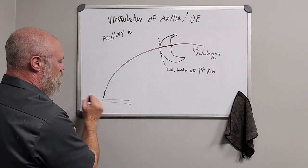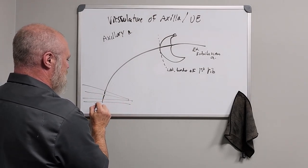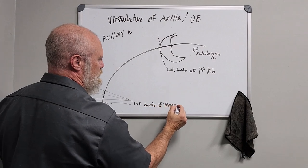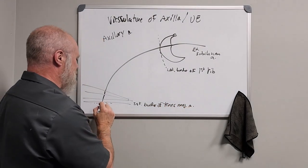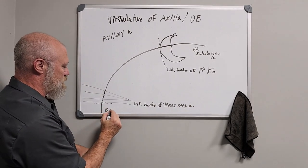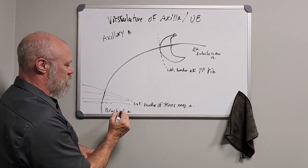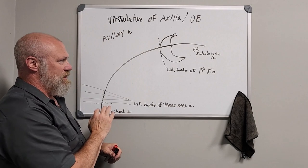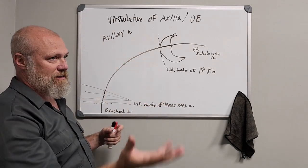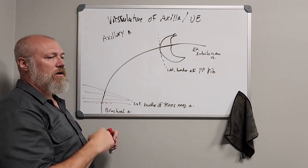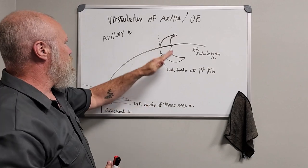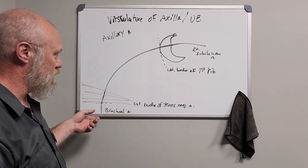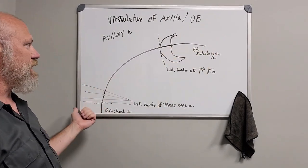The axillary artery ends when it crosses the inferior border of the teres major muscle — at that point its name becomes the brachial artery. We'll do a separate video on the brachial artery in the brachium region. So: right subclavian before that region, right axillary artery through the armpit from the lateral border of the first rib to the inferior border of teres major, and right brachial artery after that.